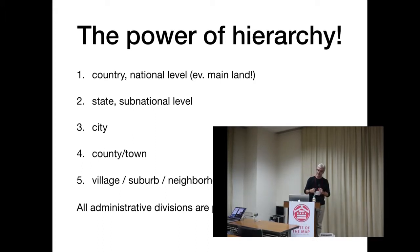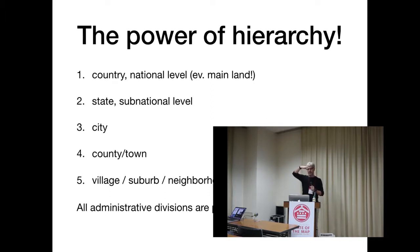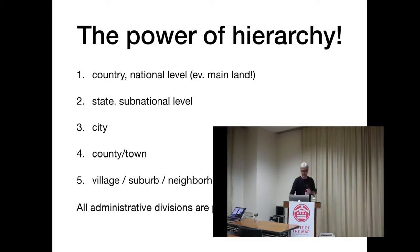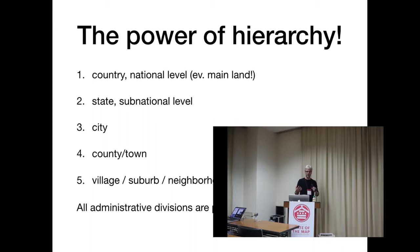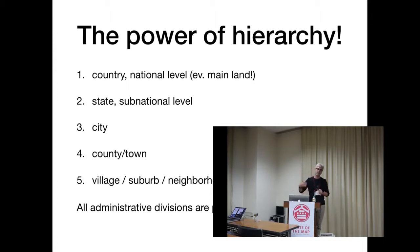Starting with the country — the highest level — which is Japan, the national level. Then the state level, city level, county, town level. The fifth hierarchy is village, suburb, and neighborhood level — sub-town level. These are all administrative divisions and they are all polygons. And if they are not, we have a first issue. But since they are polygons, you can calculate hierarchy and attach it to Aizu Wakamatsu.